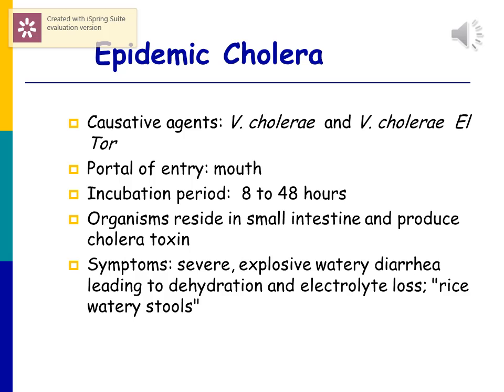Epidemic cholera has been involved in worldwide epidemics. The causative agents are Vibrio cholerae and Vibrio cholerae El Tor. Entry is through ingestion, with an incubation period of 8 to 48 hours. Vibrio cholerae resides in the small intestine and produces a very potent toxin called cholera toxin. Symptoms are severe explosive watery diarrhea that very rapidly leads to dehydration and electrolyte loss, described as rice water stools.